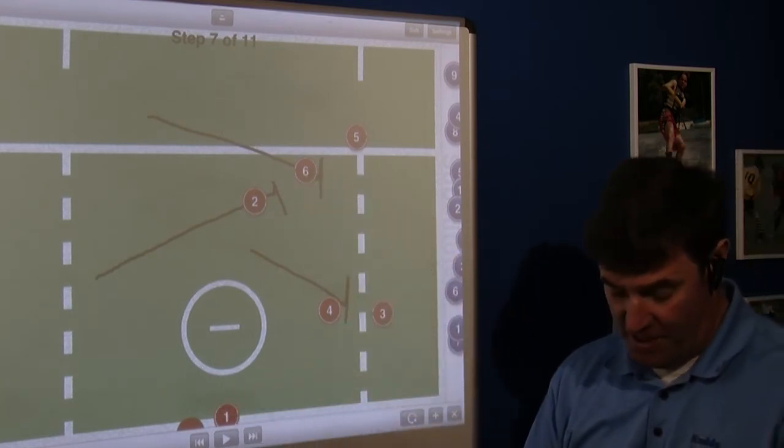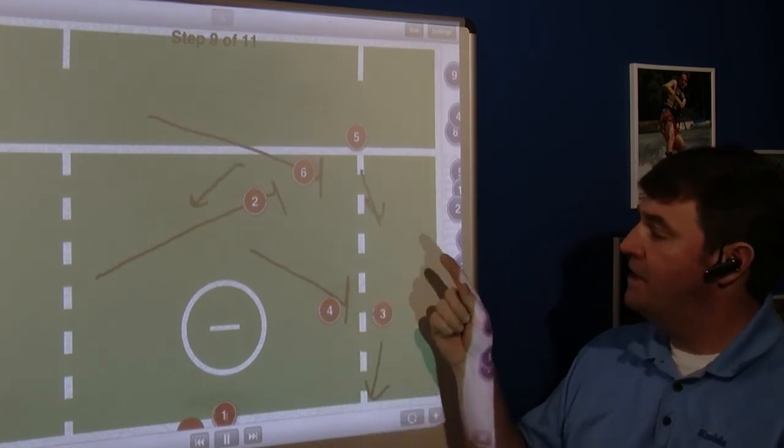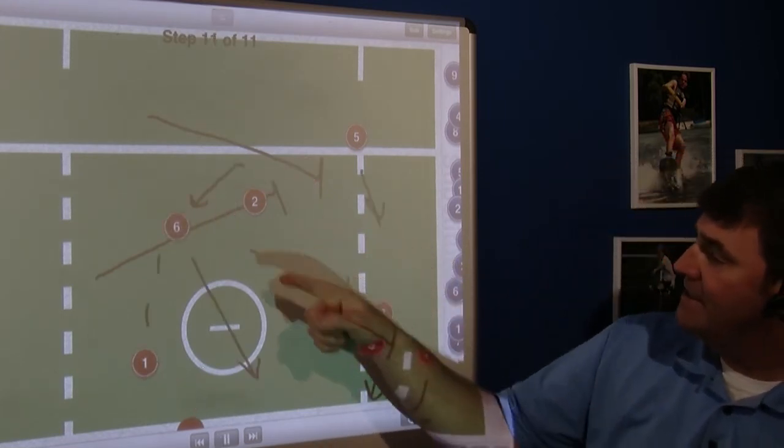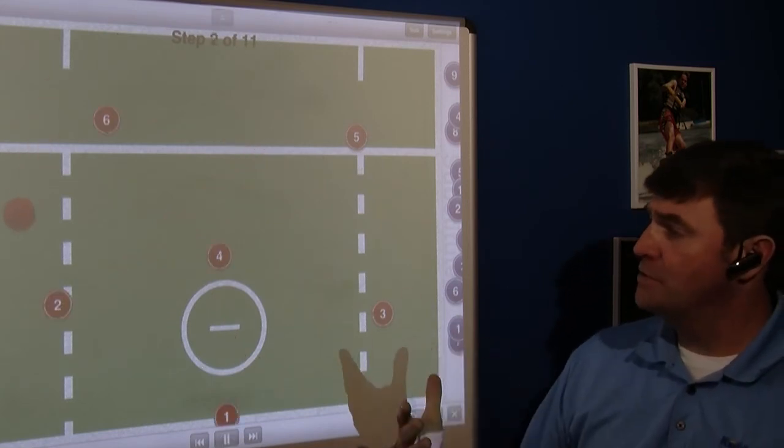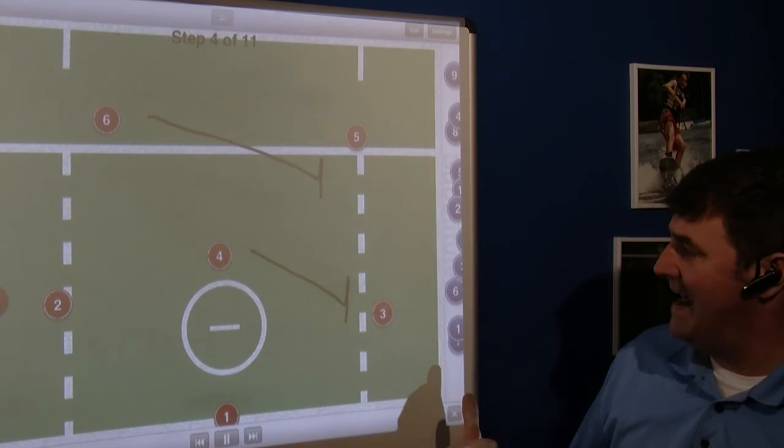Number one is going to free himself up to get to that side of the field. Number six comes off that pick, pass, and a shot. It's a great way to teach your kids how to be an actor off ball.